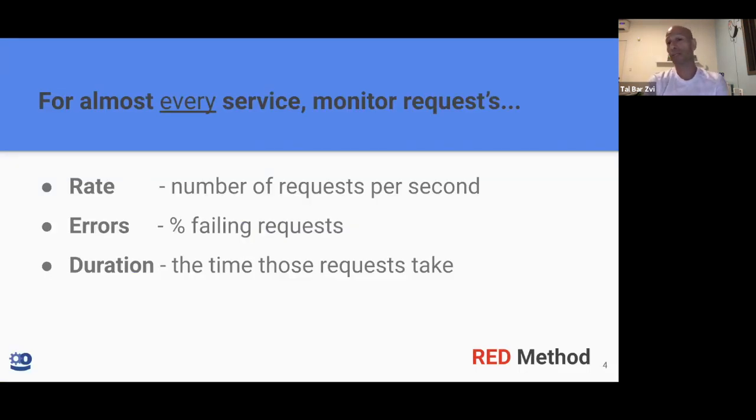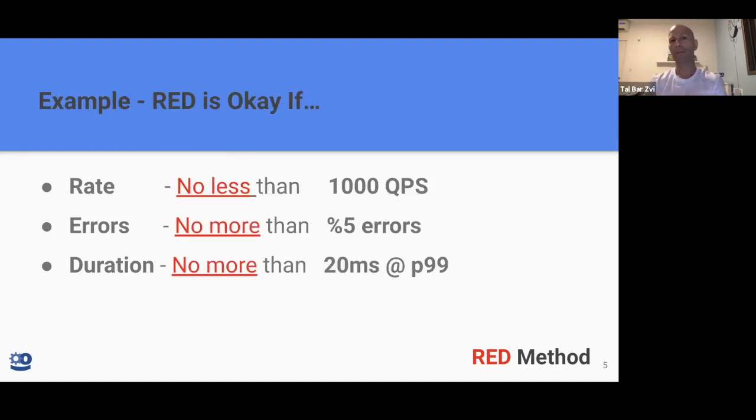Rate is the number of requests per second, per minute. The error rate, how much failed out of the total, and the duration, what's the response time. For example, RED monitoring is okay if the rate is not less than 1000 query per seconds or QPS, no more than 5% error in total, and the duration is no more than 20 milliseconds, 99th percentile. So if you will have that to one of your services, you will look at it as a black box and you will know that the basic functionality is just okay.